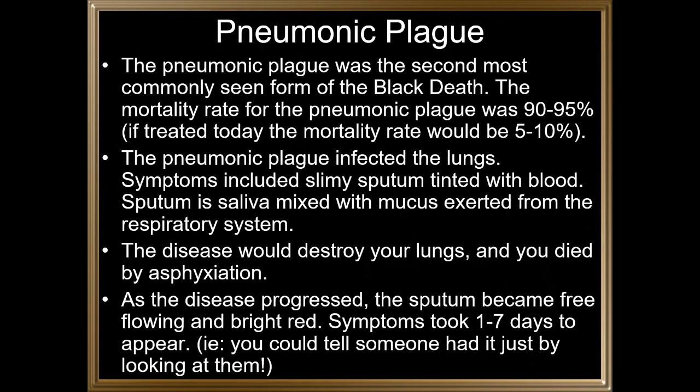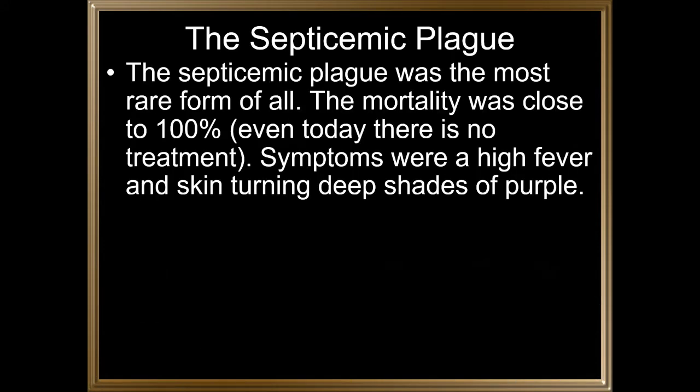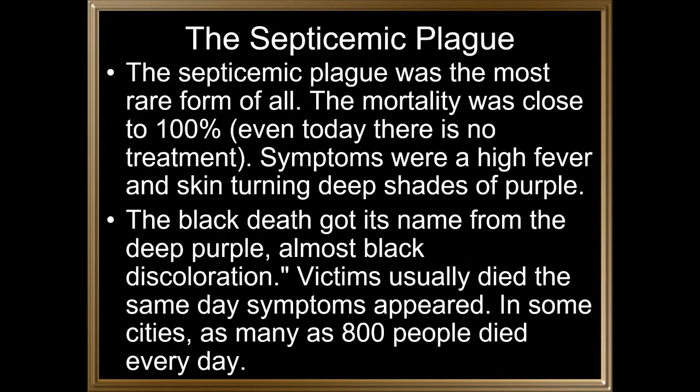The septicemic plague was the most rare form of all, but the mortality rate was close to 100%, and even today there is no treatment. Symptoms were a high fever and skin turning deep shades of purple. The Black Death got its name from the deep purple, almost black discoloration. Victims usually died the same day that symptoms appeared.